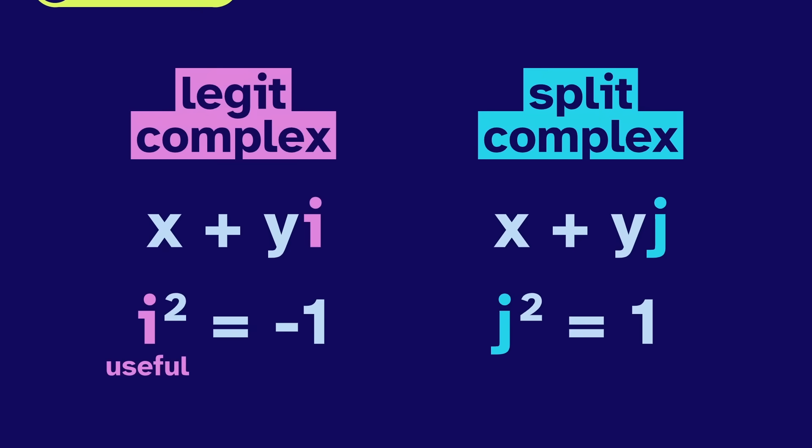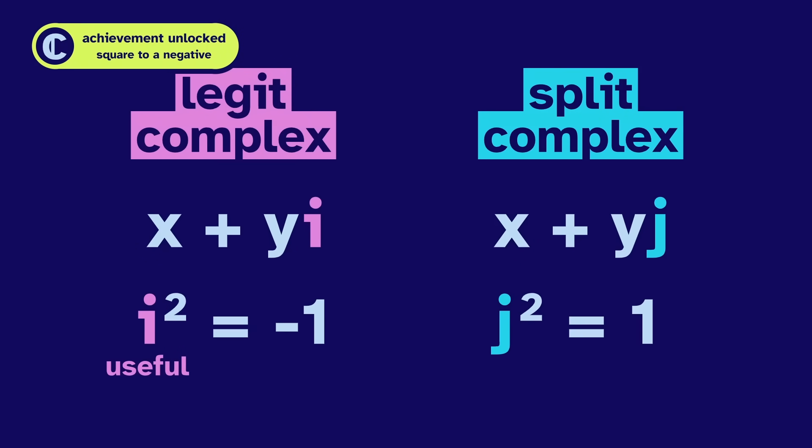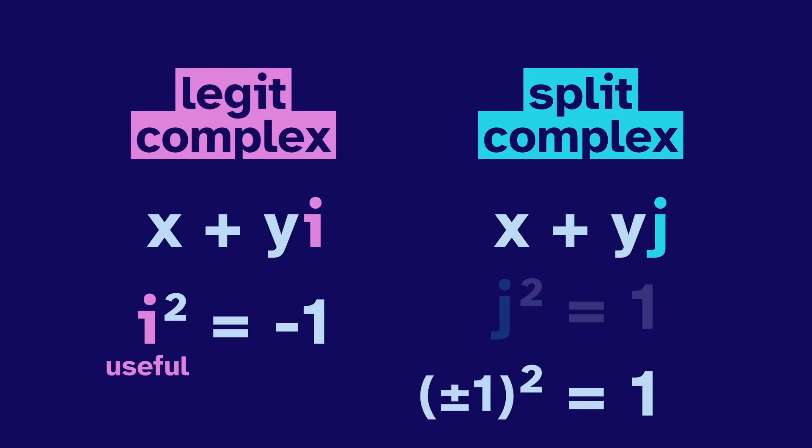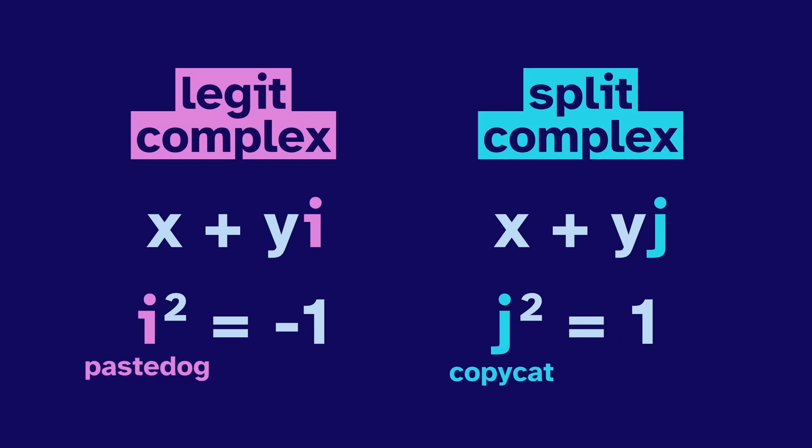i is useful. It unlocks the ability to square to a negative, which can't be done in the reals. But j doesn't add any value. 1 and negative 1 already square to 1. j is just a copycat. But still, it has some interesting properties.